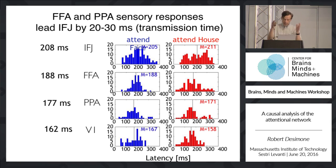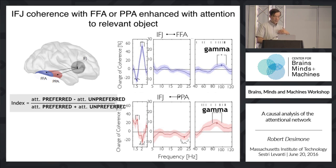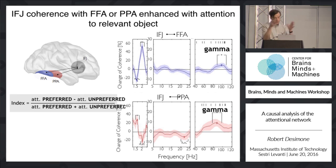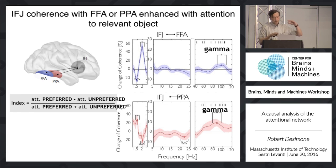Now, in terms of thinking about how one area might be influencing activity in another, we look at coherent interactions across areas. We plot the change in coherence as a function of frequency between the IFJ and the face area when subjects are attending to faces, and for the place area when subjects attend to places. At the tagging frequency there's a very strong effect — not surprising. But interestingly, up in the gamma frequency range, there's increased gamma coherence across structures when subjects are cued to attend to the appropriate object type, suggesting the IFJ goes into coherent interactions with either the face or the place area depending on the attention cue.